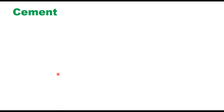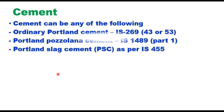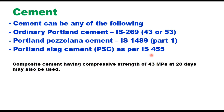Cement can be of any of the following categories: Ordinary Portland Cement as per IS 269 (43 grade or 53 grade), Portland Pozzolana Cement as per IS 1489 Part 1, or Portland Slag Cement as per IS 455. Cement in which a portion of Portland cement clinker is replaced by an industrial by-product like fly ash is called composite cement. If composite cement is used, its compressive strength should not be less than 43 MPa at 28 days.